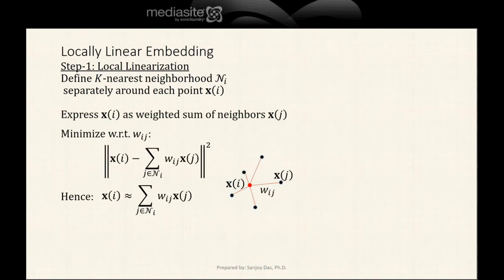Each sample point Xi we express as a weighted sum of the neighbors Xj. Xj is a neighbor of Xi, and there are k such neighbors. What we have to do is express Xi as a weighted combination of its nearest neighbors Xj. Our first goal is to find this set of weights, Wij.